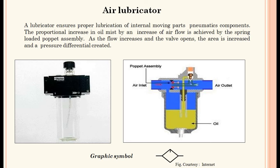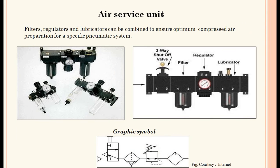Air lubricator ensures proper lubrication of internal moving parts of pneumatic systems. A proportional increase in oil mist with increasing air flow is achieved by a spring-loaded poppet assembly — as flow increases, the valve opens, increasing the area and creating a pressure difference. A photo, cut section view, and graphical symbol are shown. The filter, regulator, and lubricator combine into the air service unit, called the FRL unit, to ensure optimum compressed air preparation for the pneumatic system.